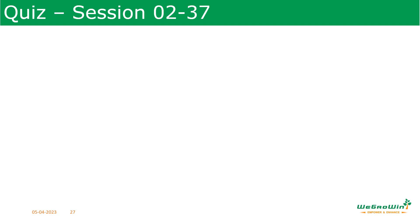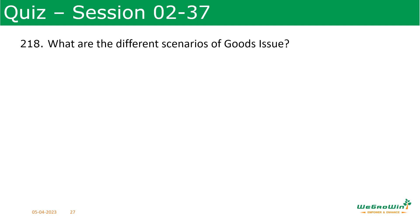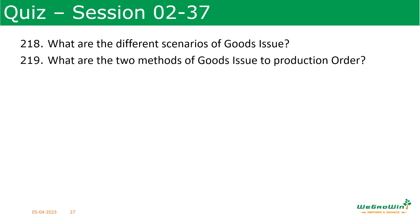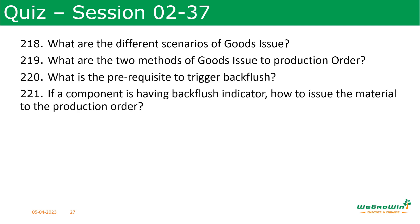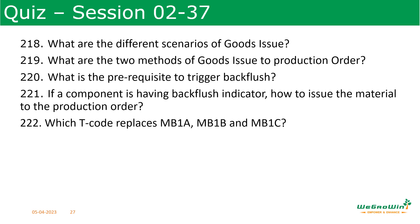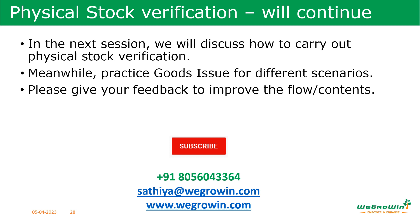In this session we discussed the goods issue process and transaction, individual fields in the MIGO transaction, goods issue to cost center and production order, and documents created during goods issue. Quiz questions for this session: What are the different scenarios of goods issue? What are the two methods of goods issue to production order? What is the prerequisite to trigger backflush? If a component has a backflush indicator, how do you issue the material to the production order? Which T-code replaces MB1A, MB1B, and MB1C? Answers will be discussed in the next session.